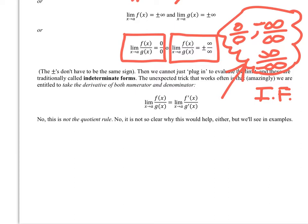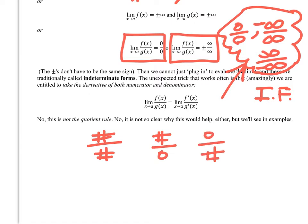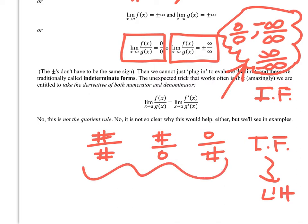The unexpected trick is that we are entitled to take the derivative of both the numerator and the denominator separately — and we can do that as many times as we want, as long as each result under direct substitution comes out to be an indeterminate form. This is NOT the quotient rule. Many people apply the quotient rule here, and that is incorrect. It's just the derivative of the top and derivative of the bottom. If we continue getting an indeterminate form, we apply L'Hopital's Rule again. Otherwise, once we get a determinate result, we have our answer.